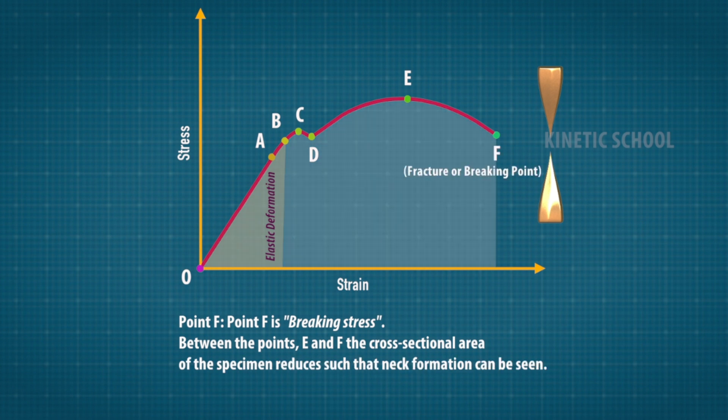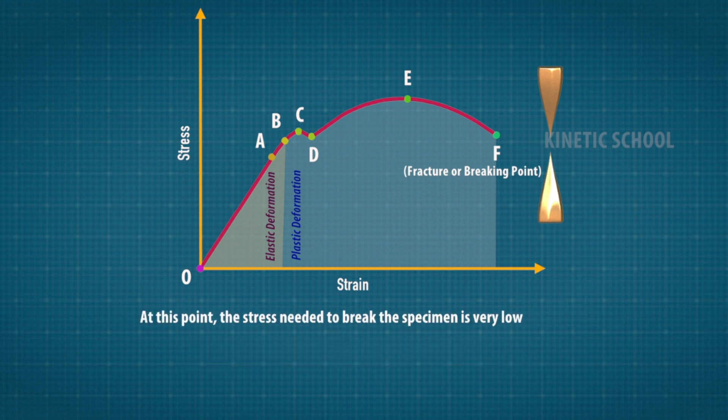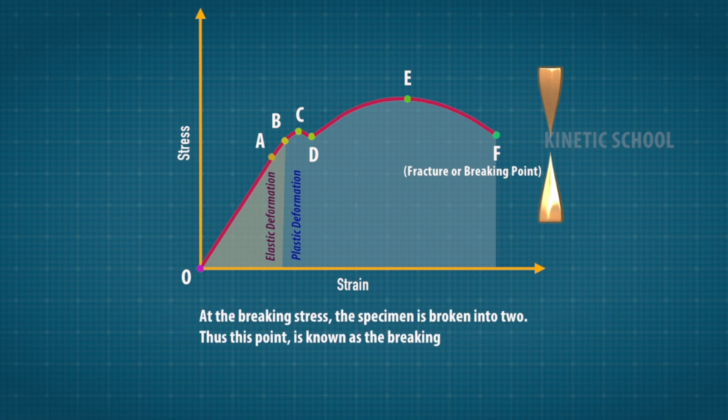Point F is the breaking stress. Between points E and F, the cross-sectional area of the specimen reduces such that neck formation can be seen. At this point, the stress needed to break the specimen is very low, even less than the ultimate stress, hence a drop in the curve from E to F is observed. At the breaking stress, the specimen breaks into two, which is why this point is known as the breaking point.